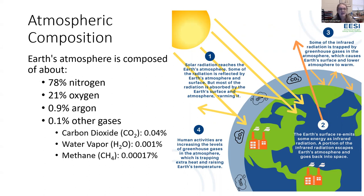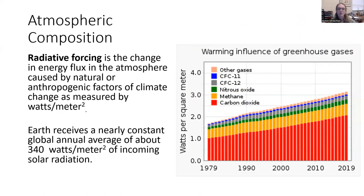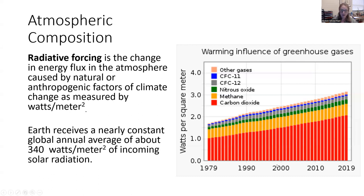Greenhouse gases warm the Earth and cause an increased radiative forcing. Radiative forcing is the energy flux in the atmosphere caused by both natural and anthropogenic factors of climate change, and we measure it in watts per square meter — essentially how much radiation is hitting the surface of the Earth. You might be most familiar with watts from light bulbs; most household bulbs are 60 watts. So 60 watts per square meter would be like one light bulb over every square meter of Earth. To put that in perspective, Earth actually receives a nearly constant 340 watts per square meter from the sun — like five or six light bulbs per square meter.